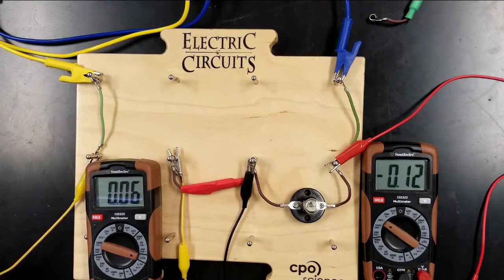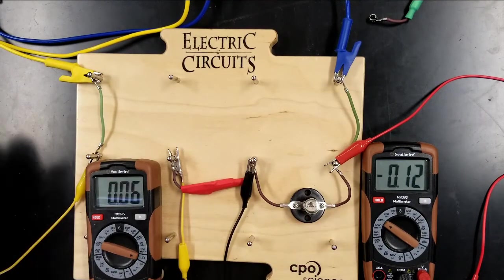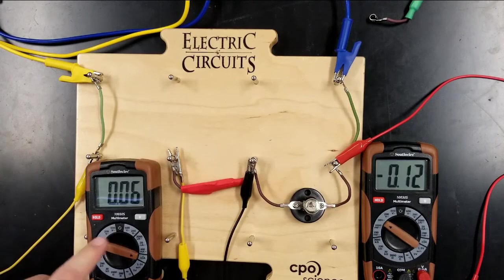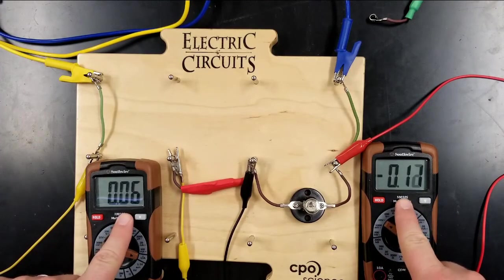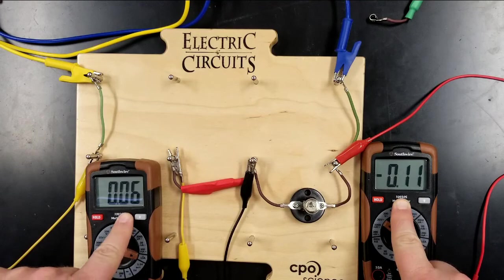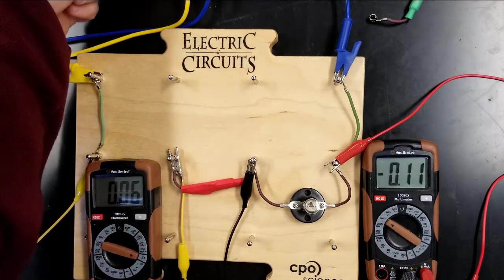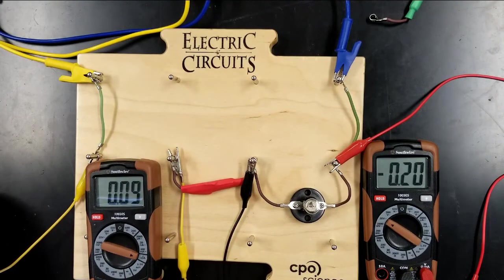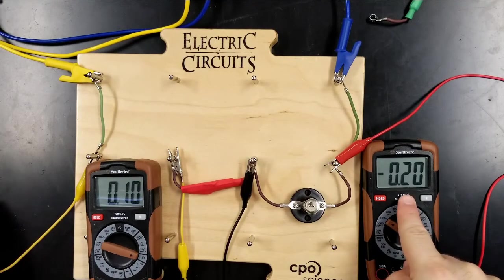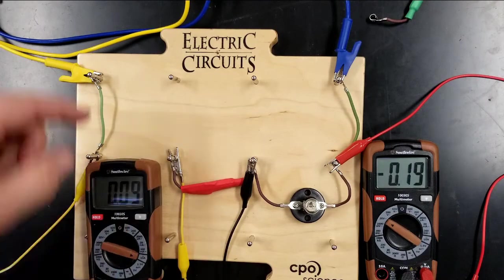We're going to do the same thing we did earlier where we turn the voltage up. I'm going to stop turning it up when my light bulb gets really bright, so I don't burn it out. And we're going to see if we get the same linear relationship between current and voltage. Here we go. Next highest setting. So over here, 0.2 volts, 0.1 amp of current.